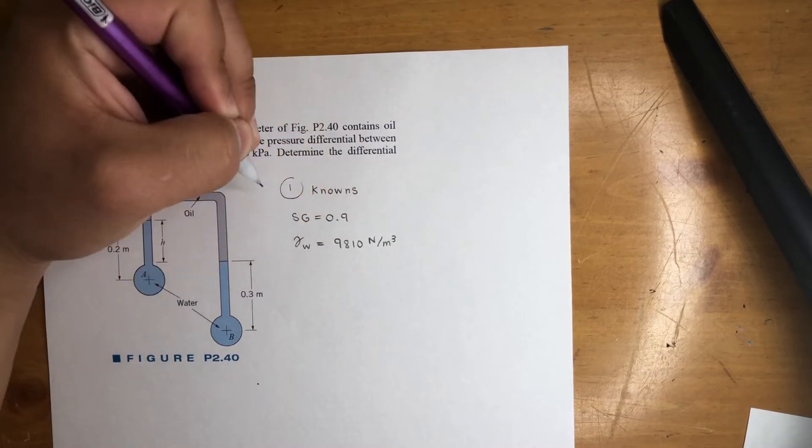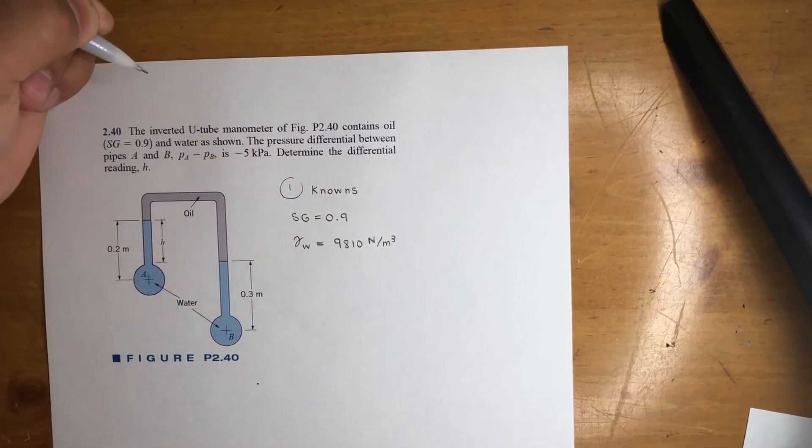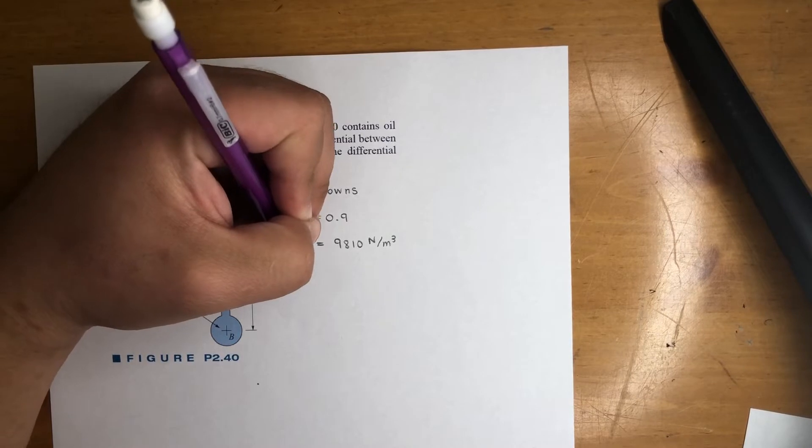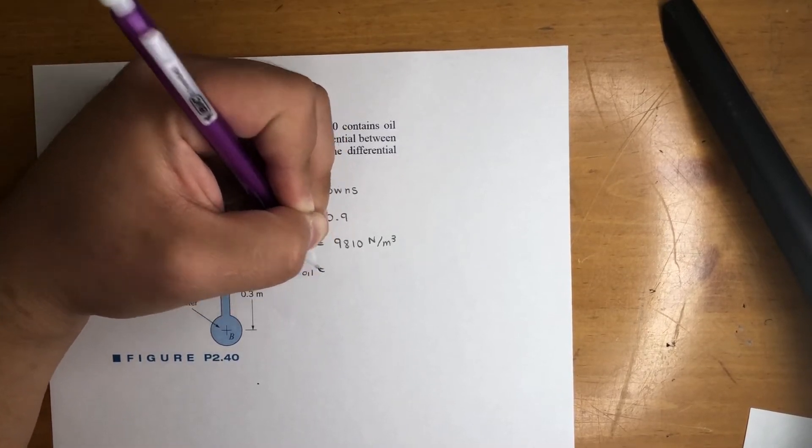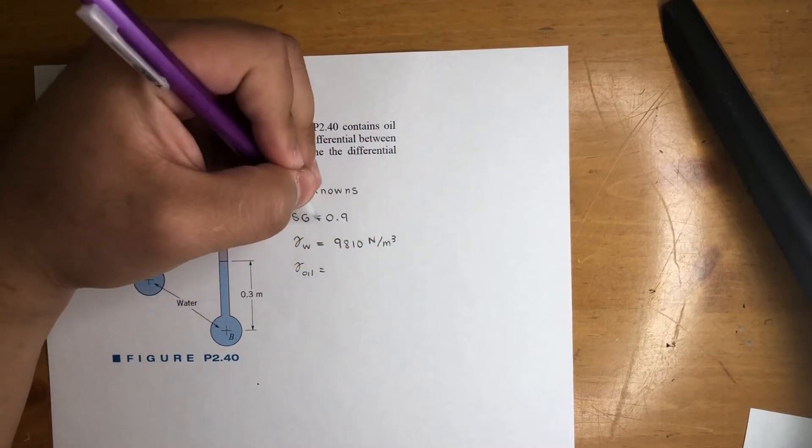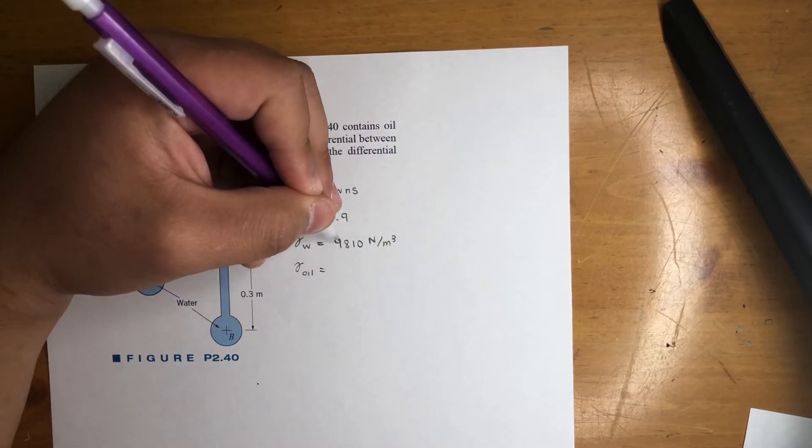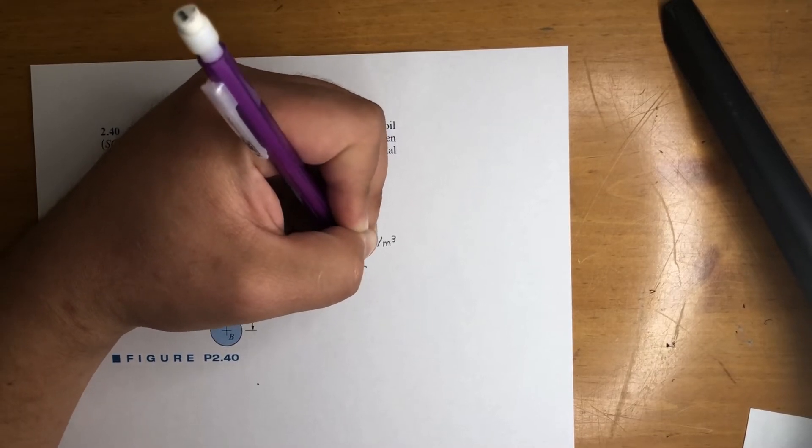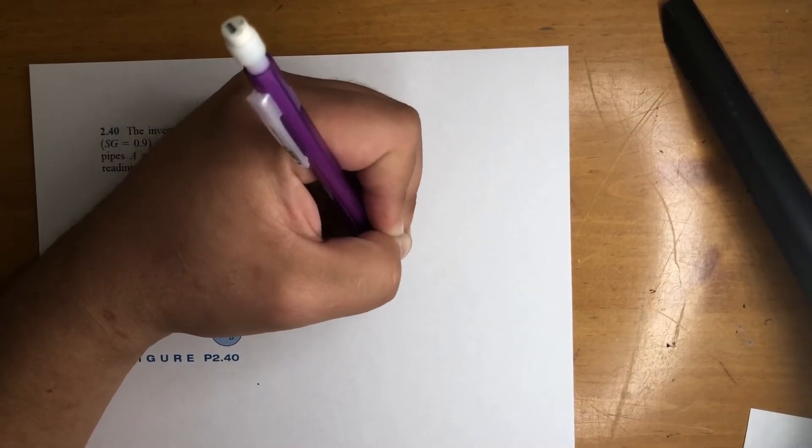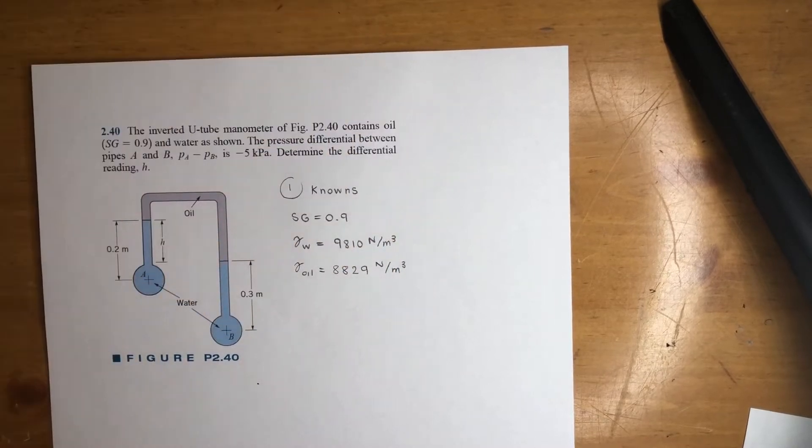We got oil. So if it's oil, we could get the specific weight. We just multiply 0.9 times gamma of water. So that's going to give you 8829 newton per meter cubed. So we got that.